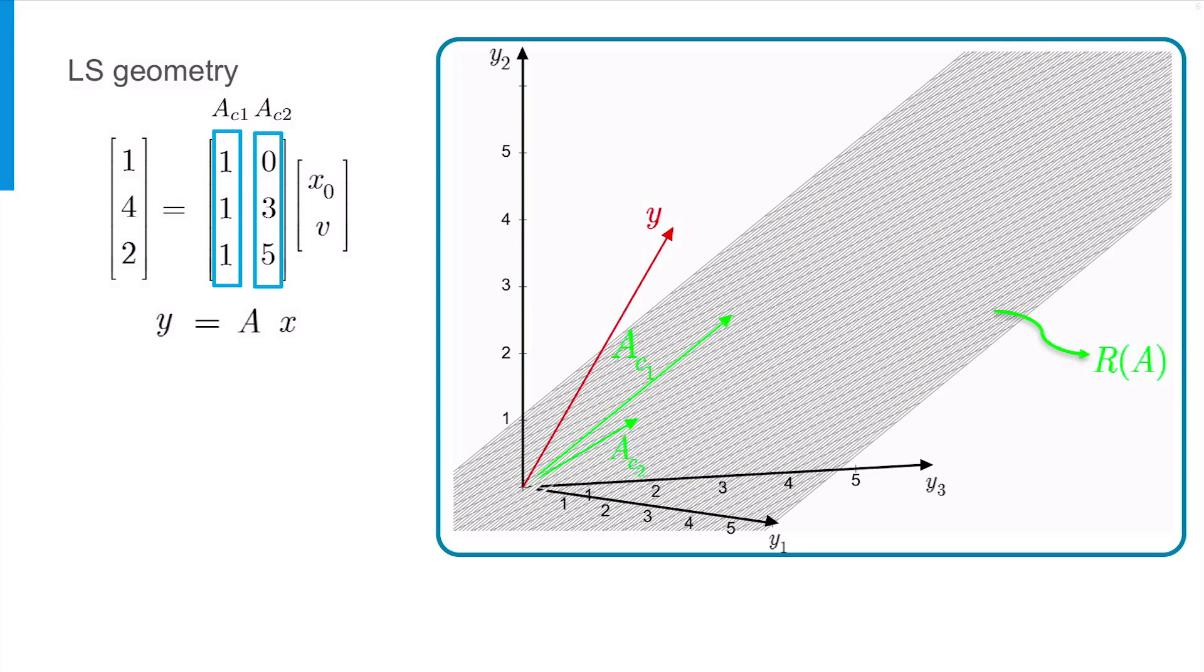We can clearly see that the vector y is outside this plane, which indicates the inconsistency of the system. From least squares, we know that the adjusted observation vector y hat is a vector in this plane, and it has the minimum distance to the observation vector y.